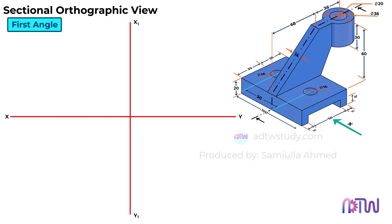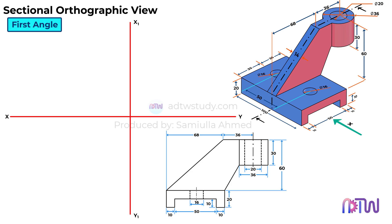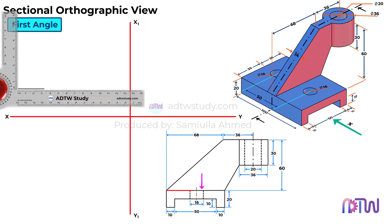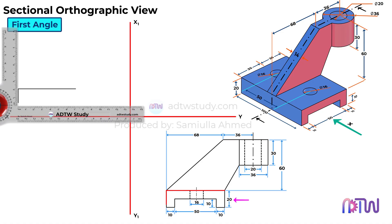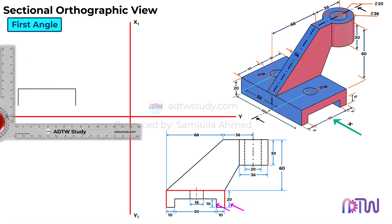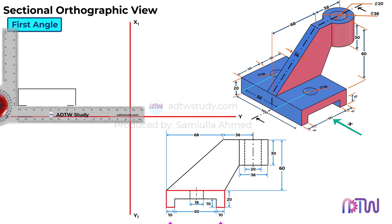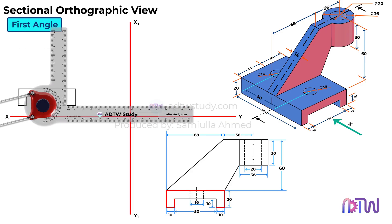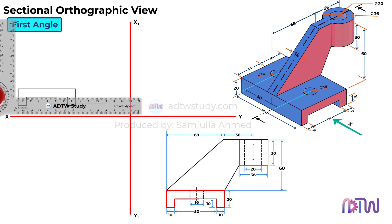Now, when we look at the object from this direction, it will appear like this. These are the dimensions of the object seen from the front view. Let's quickly draw the front view of the object. First, take a drafter and draw a horizontal line of 70 mm as shown. From both ends of this line, extend vertical lines of 20 mm downward. Next, from the bottom of these vertical lines, draw 10 mm horizontal lines, followed by 10 mm vertical lines as shown. Finally, connect these two points with a horizontal line to complete the outline of the base.